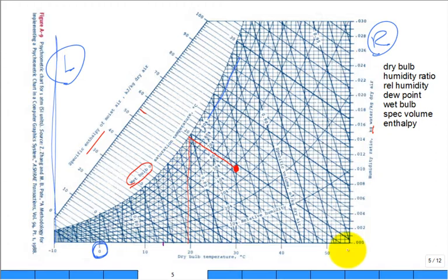So, lines of constant wet bulb run like lines of constant enthalpy. Yeah, they're a slightly different slope and they're slightly different on this plot that I gave you. It's a little better. It's an ASHRAE handout. The wet bulb temperature line is a dashed line and it's numbered in some of the lines.